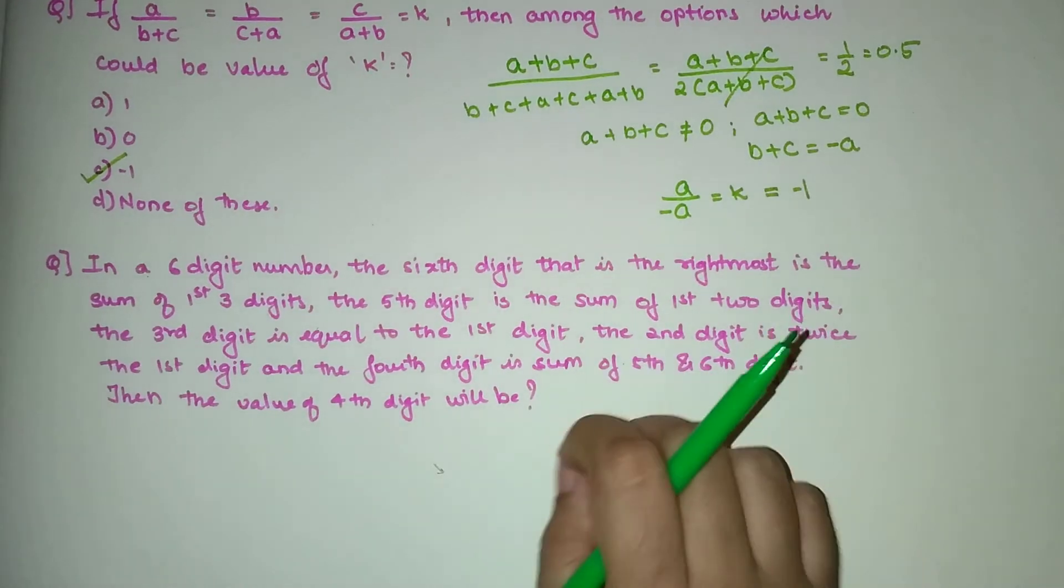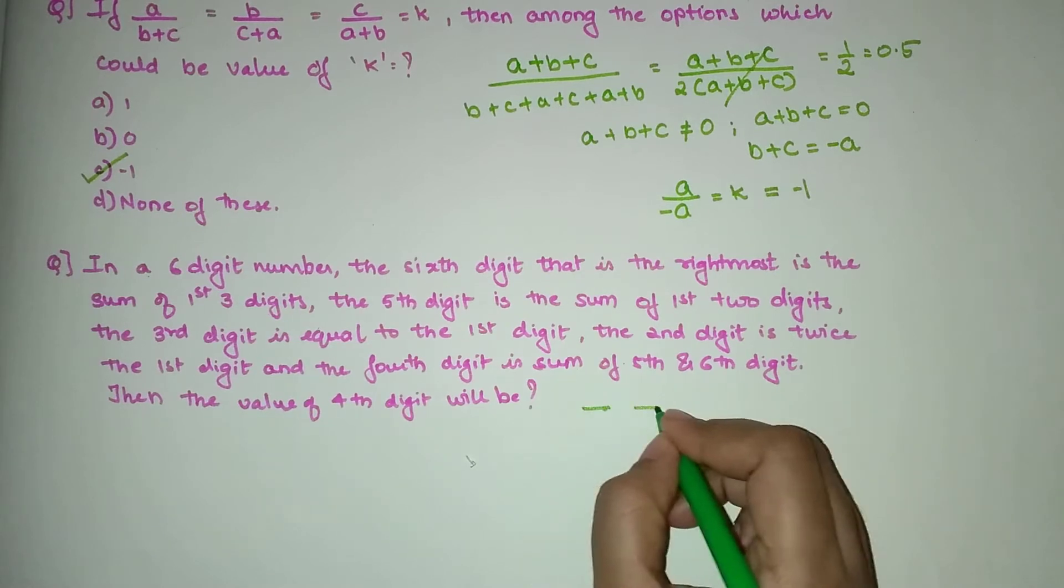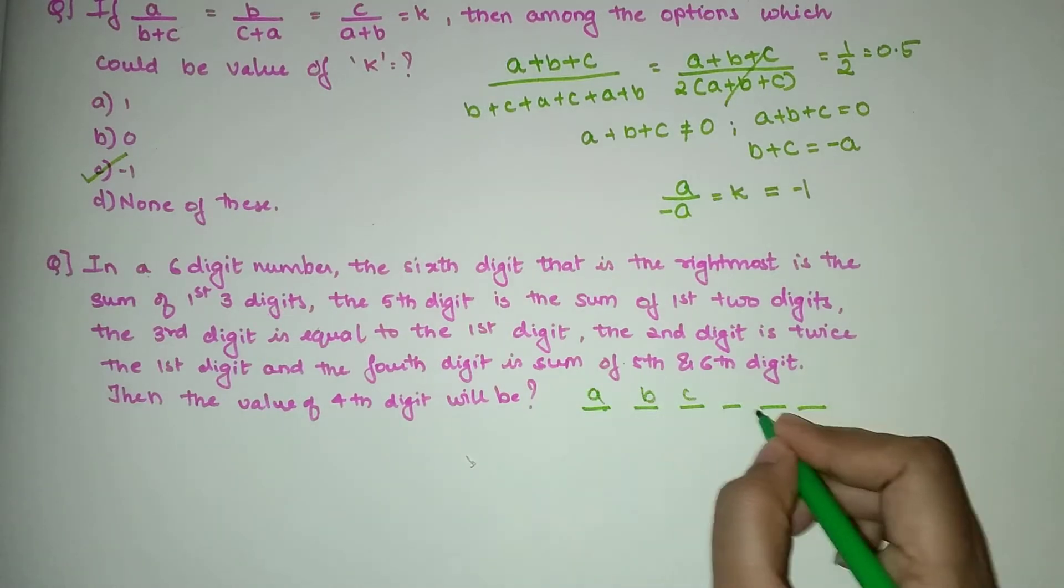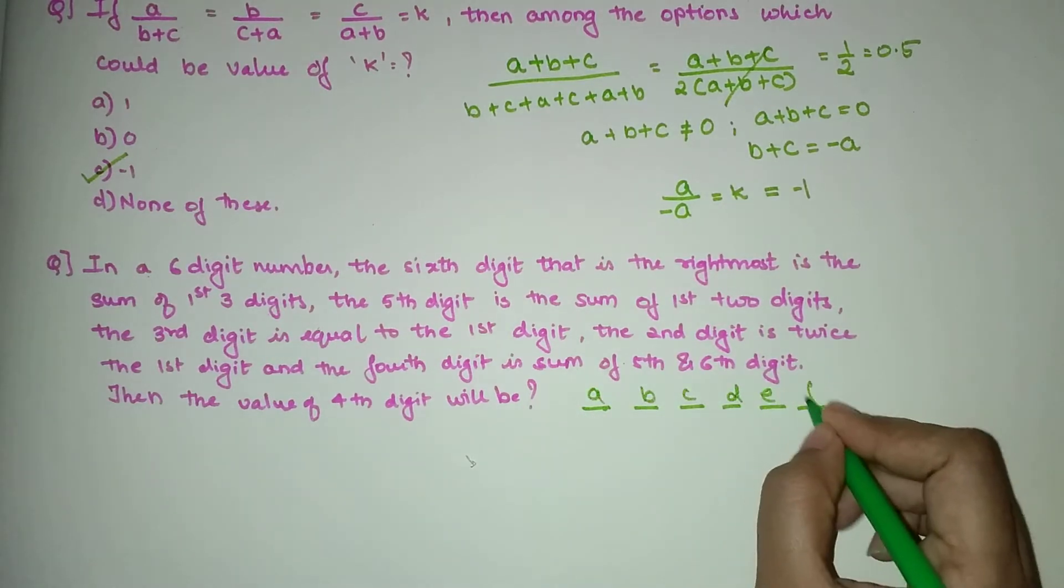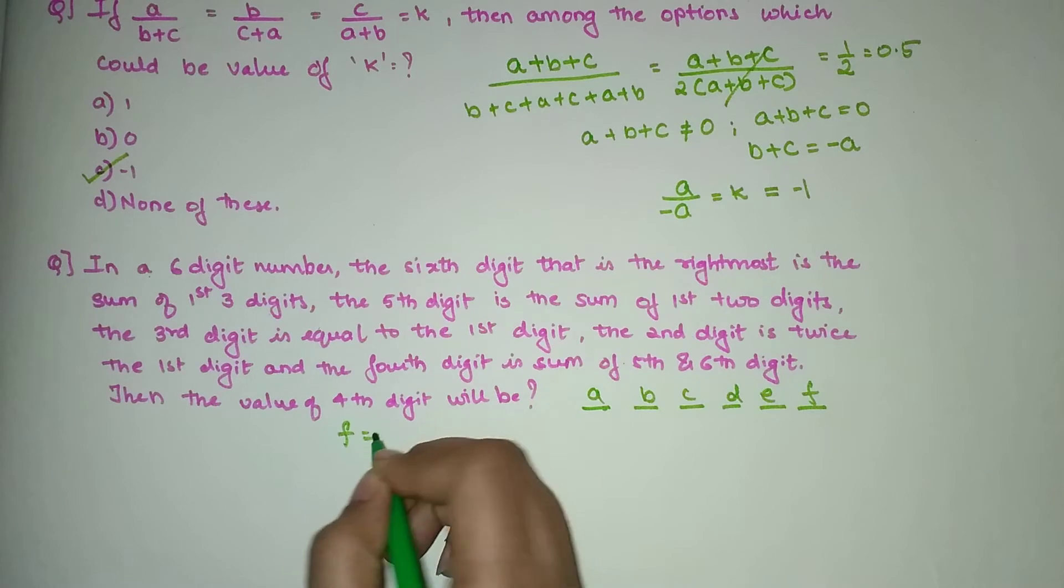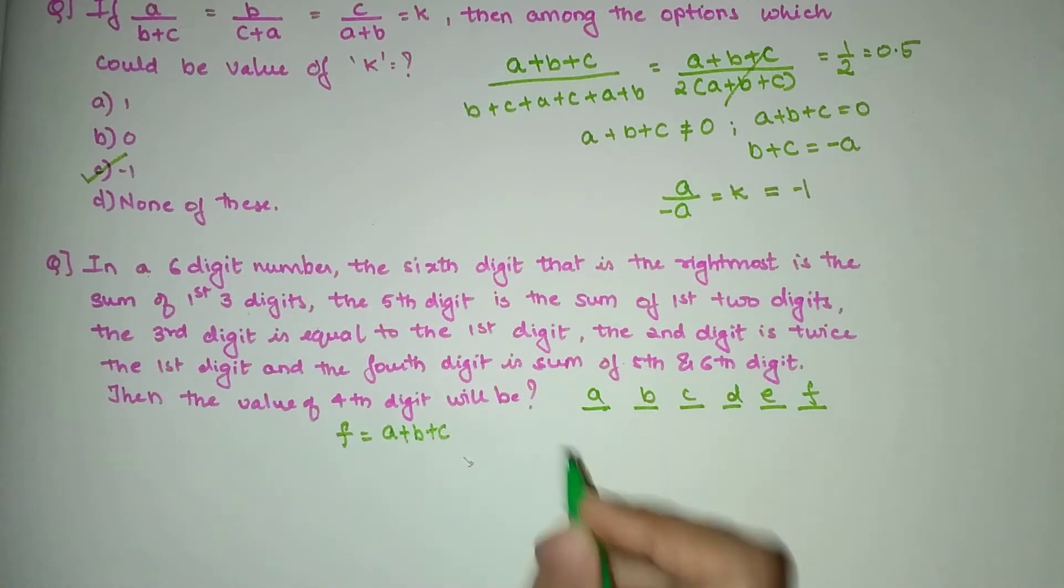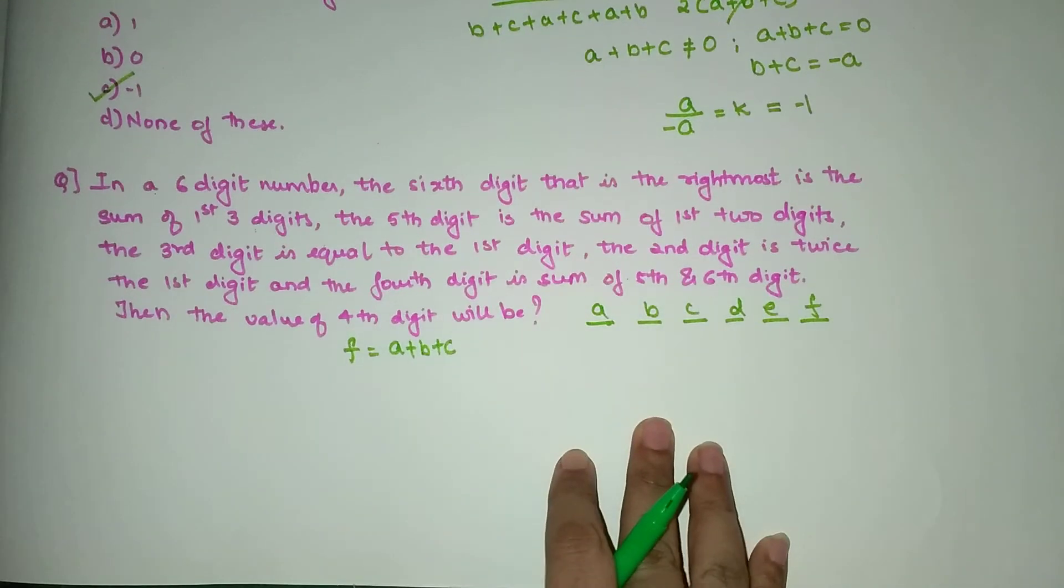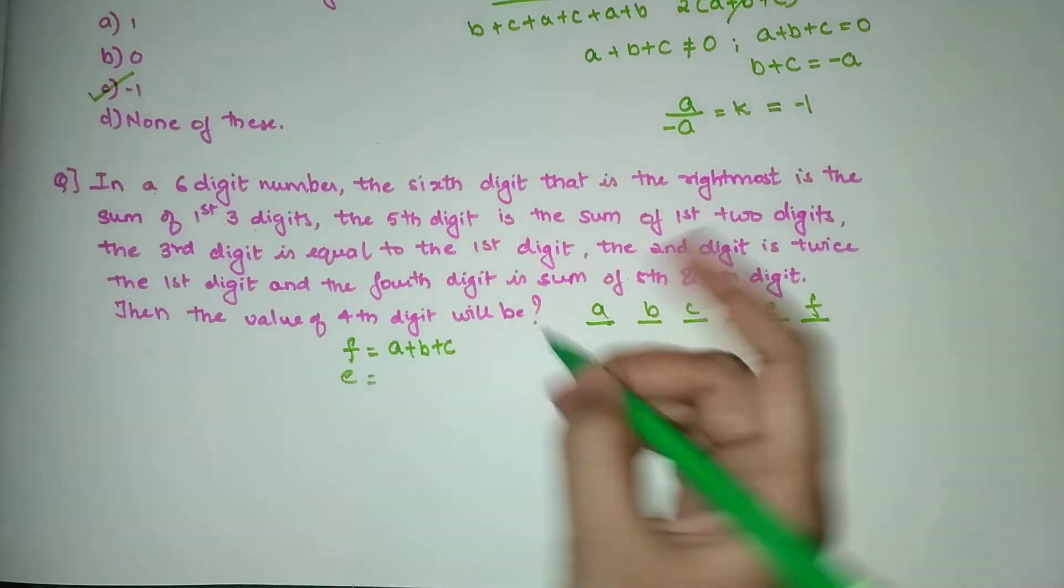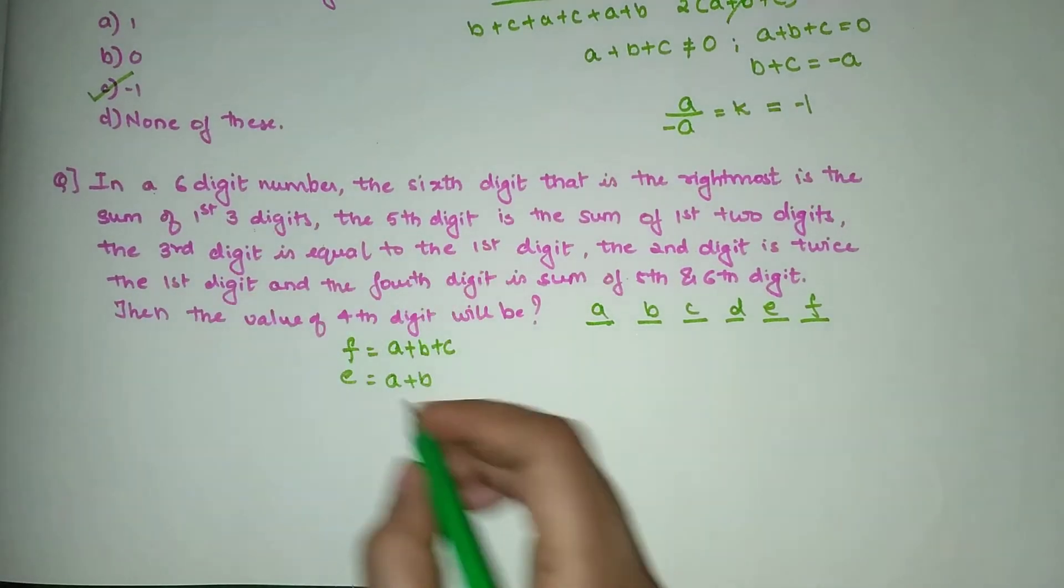Let's assume that my six-digit number is A, B, C, D, E, and F. They have said that the sixth digit, which is the rightmost, so F = sum of first three digits. So A+B+C. Then the fifth digit, E, is sum of first two digits. So E = A+B. Then the third digit is equal to first digit, so C = A.